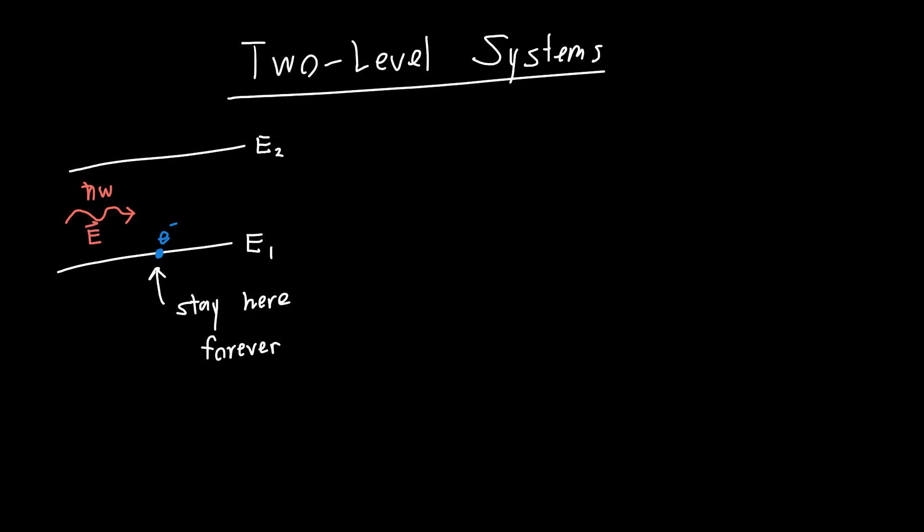So in the last couple videos, we've analyzed two-level systems, and previously we've analyzed them in the absence of some external perturbation. So we said if we had some energy level E1 and energy level E2, and maybe initially we had an electron in this state down here, and we found out that the electron is just going to stay here forever, unless we apply some external electric field or some external photons. And so that's what we're going to do in this video. We're going to apply some electric field or equivalently some photons and see what happens.